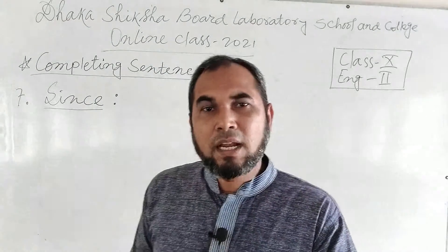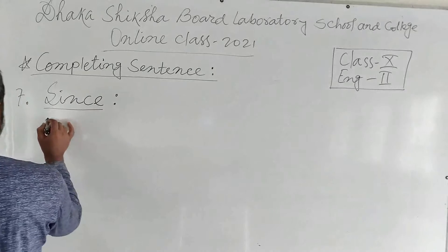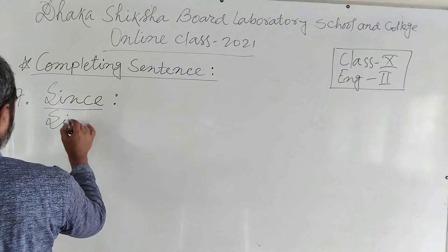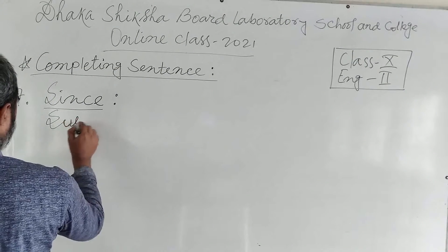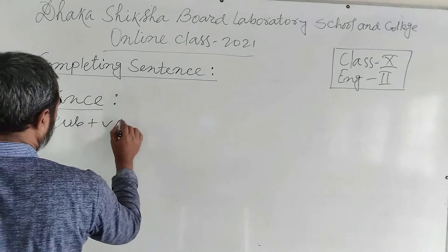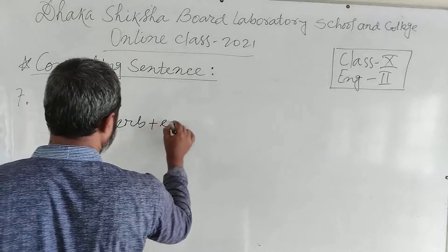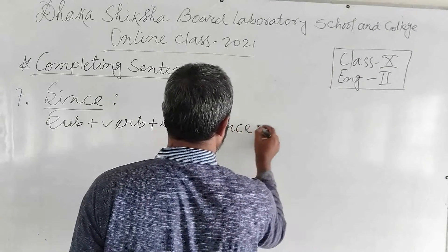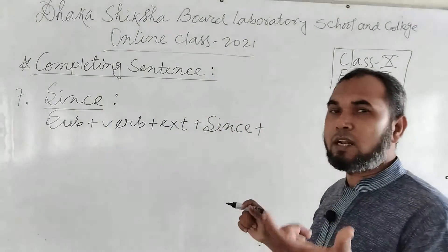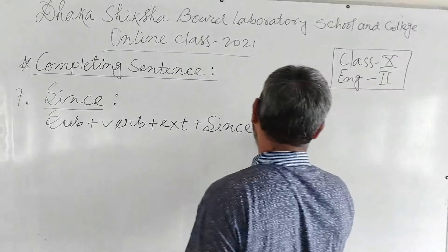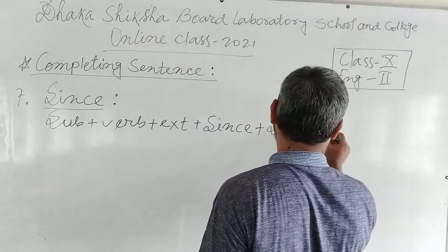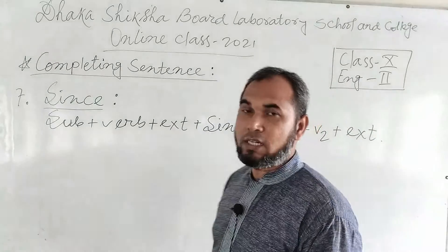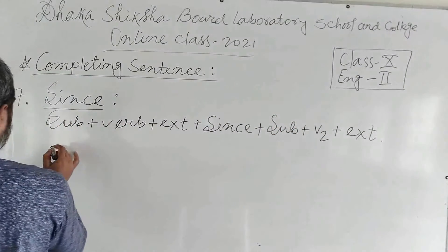Let us write the structure. Suppose: subject, then verb, then extension if we have, then 'since', then we can say the second clause — subject once again, then verb, then extension. This is the structure.